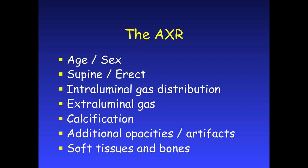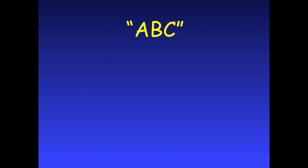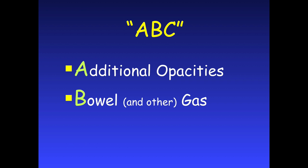The age, sex, and supine or erect position will be written on the film or given in the history. The main things on an abdominal x-ray are the luminal gas pattern, extra-luminal gas, calcification, and additional opacities or artifacts. We like to use the ABC mnemonic: A for additional opacities, B for bowel gas pattern or extra-luminal gas pattern, and C for calcification — easy to remember.